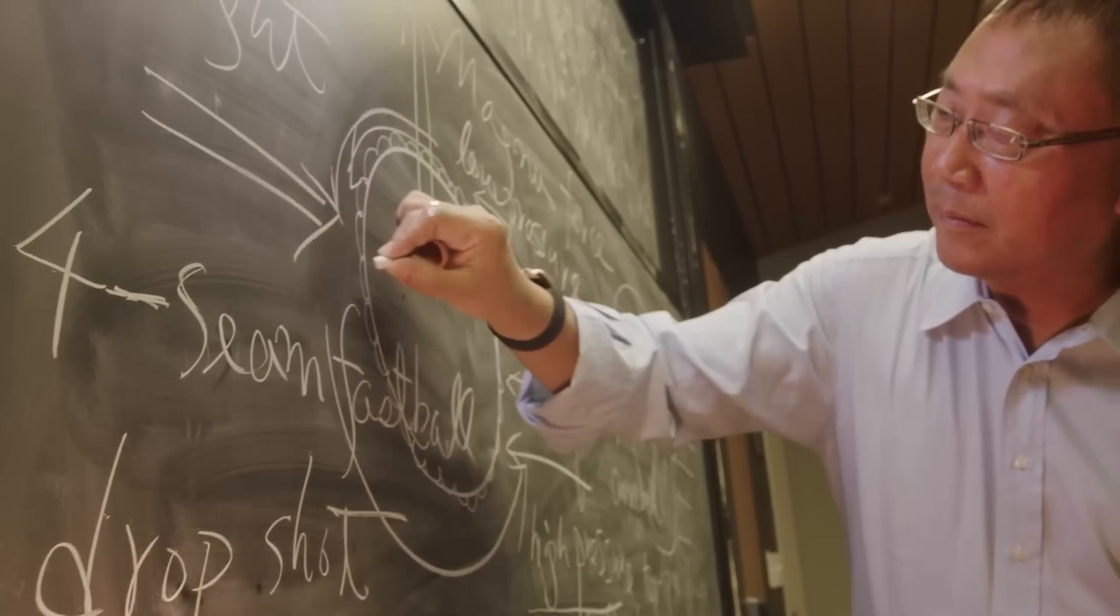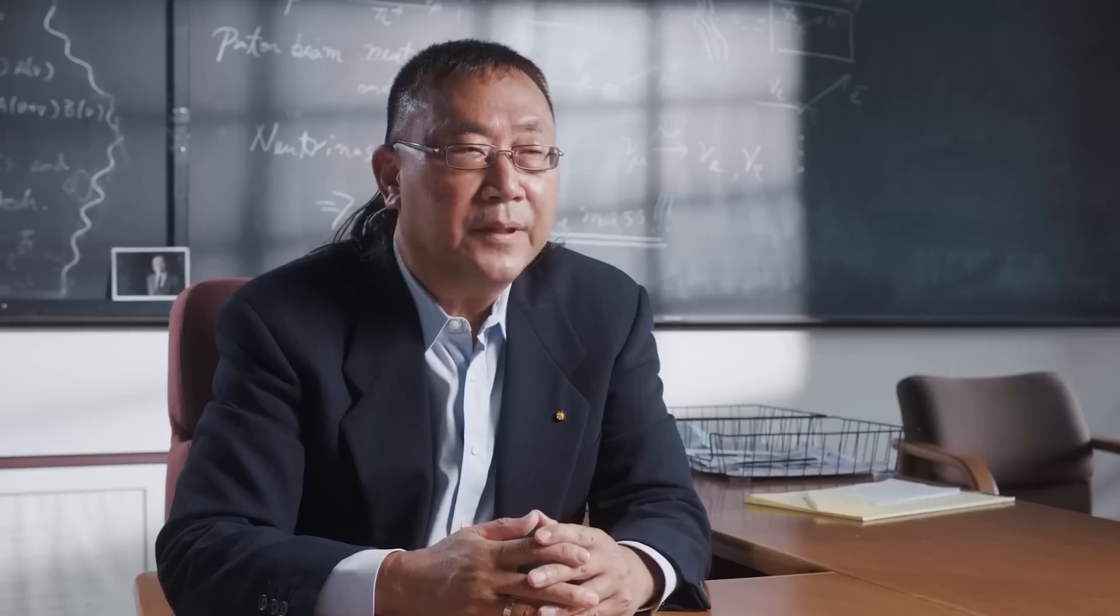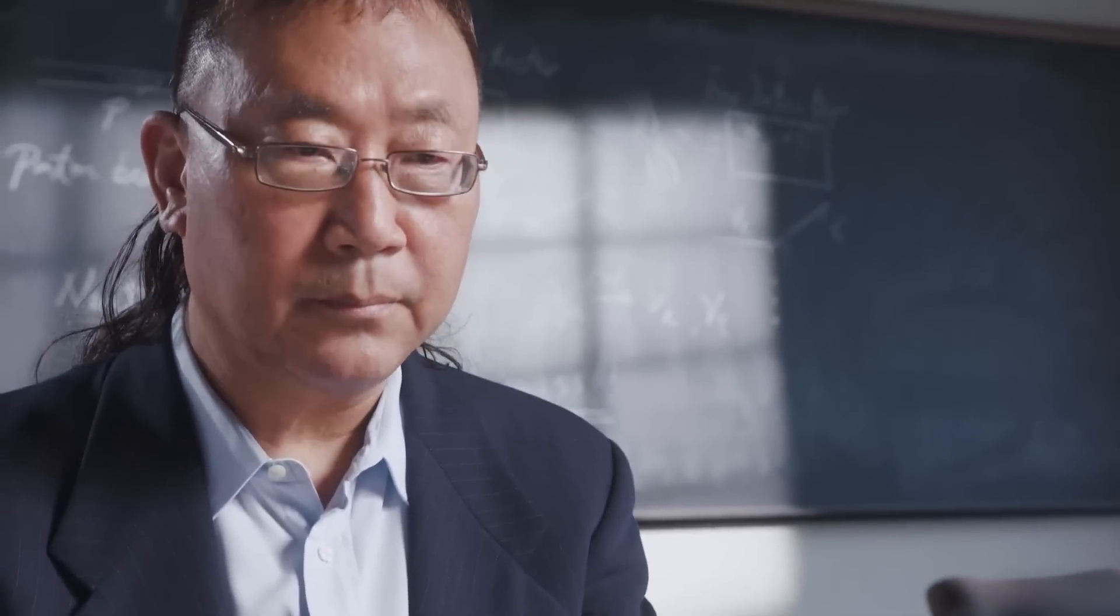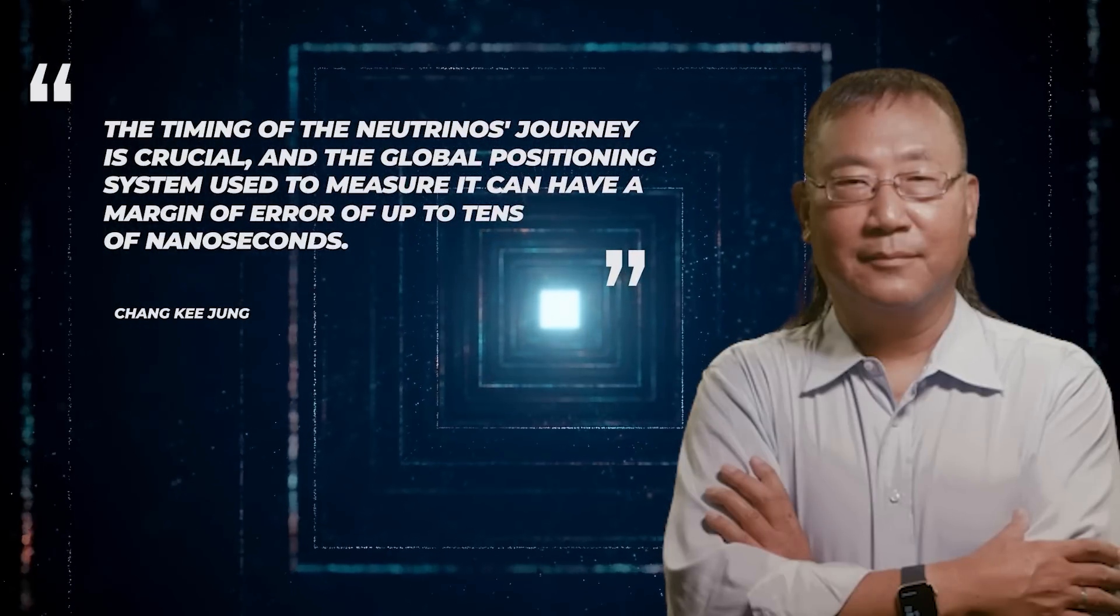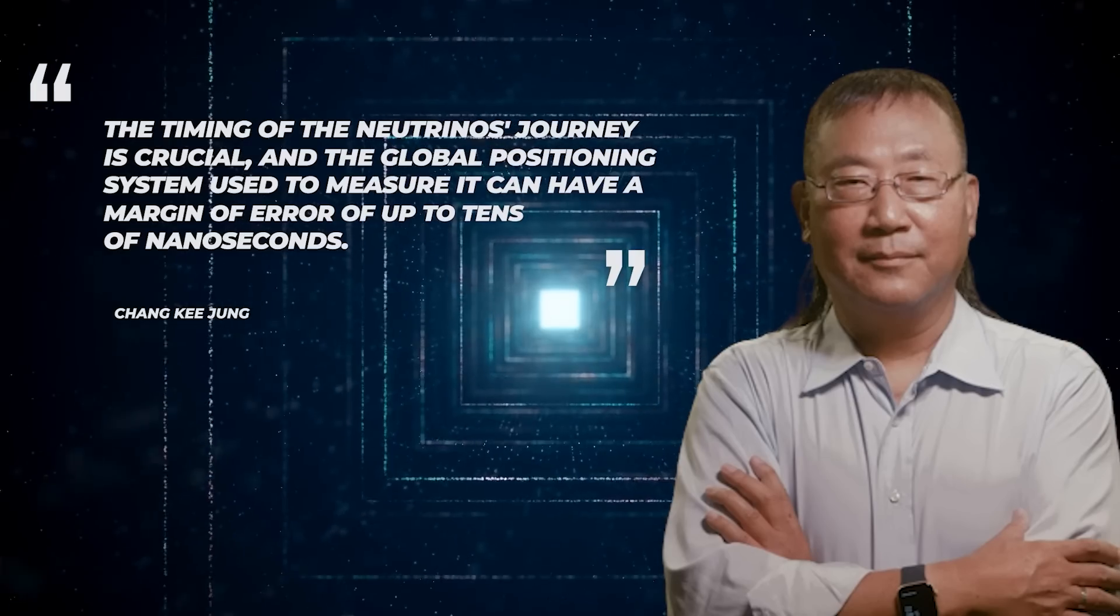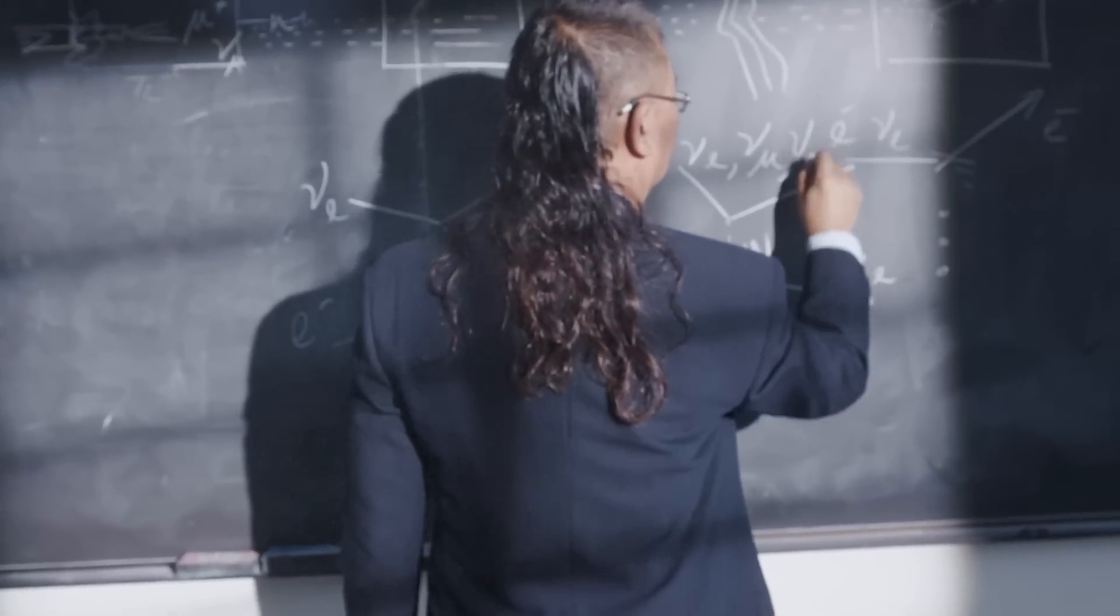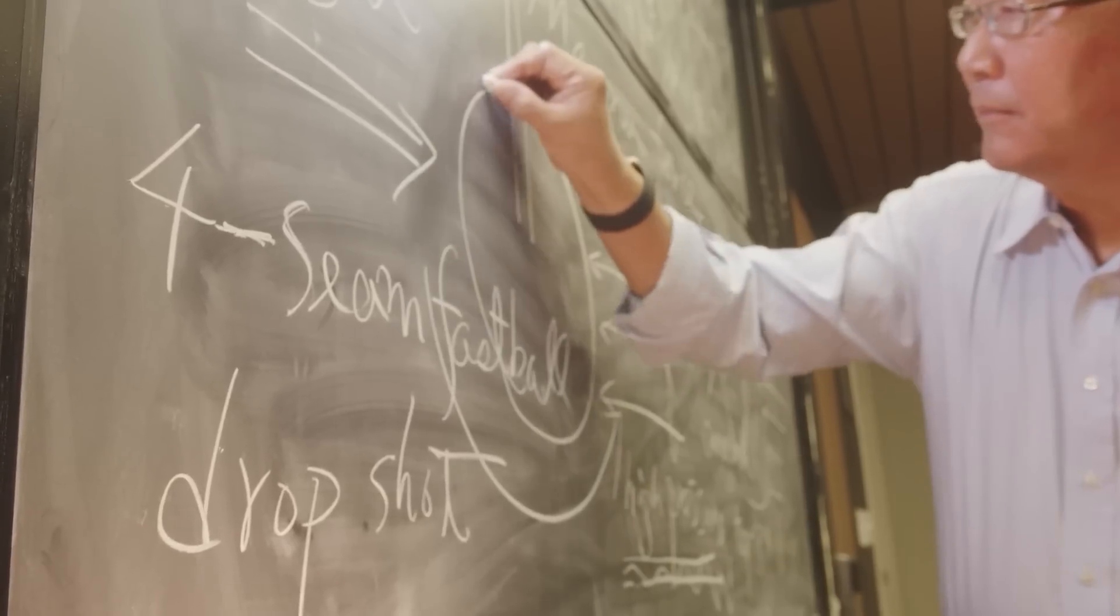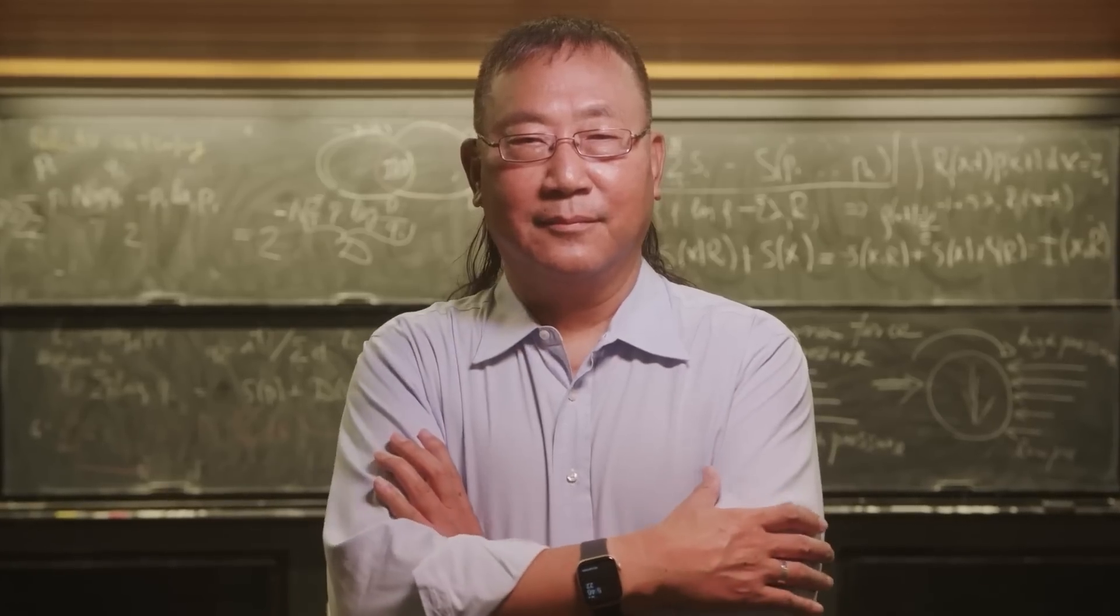Chang Ki Young, a physicist specializing in neutrinos at Stony Brook University in New York, isn't so sure about the recent discovery of faster-than-light particles. According to Young, who is also the US spokesperson for a similar experiment in Japan, the timing of the neutrino's journey is crucial, and the global positioning system used to measure it can have a margin of error of up to tens of nanoseconds. While he's not saying that the researchers at CERN are wrong, Young believes that there may be a systematic error that has yet to be identified, and he's not the only one who's skeptical.